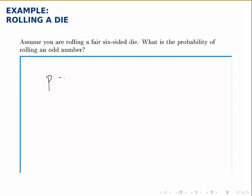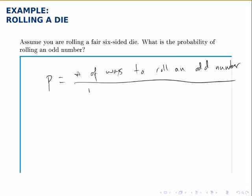Remember, a basic probability is the number of ways that our event could occur, so in this case the number of ways to roll an odd number, divided by the number of total possibilities for what could occur when we run this experiment.